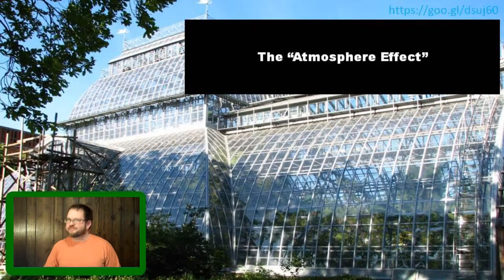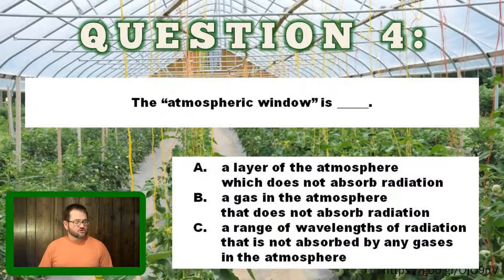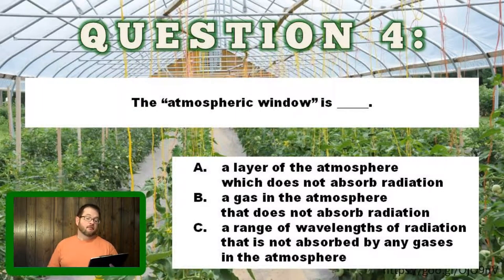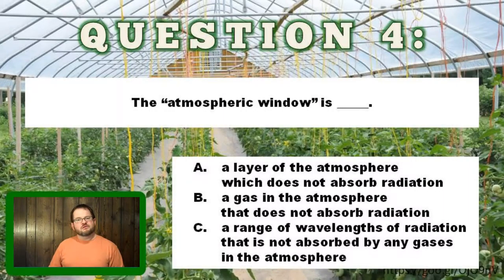This is not the only time the greenhouse effect will come up in this course, but this covers the basics of the radiation aspects of the greenhouse effect. Before we wrap up this lecture, here's question four: the atmospheric window is — A, a layer of the atmosphere which does not absorb radiation; B, a gas in the atmosphere that does not absorb radiation; or C, a range of wavelengths of radiation that is not absorbed by any of the gases in our atmosphere. Pick one of those three options to move on and get some feedback before question five.